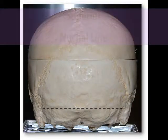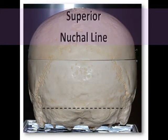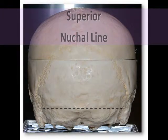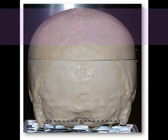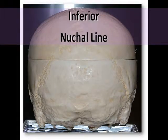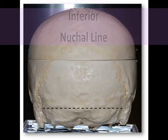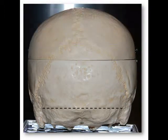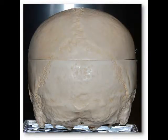Our last two bony landmarks on the occipital bone are the superior and inferior nuchal lines. These are two pairs of curved ridges that serve as areas of muscle attachment.